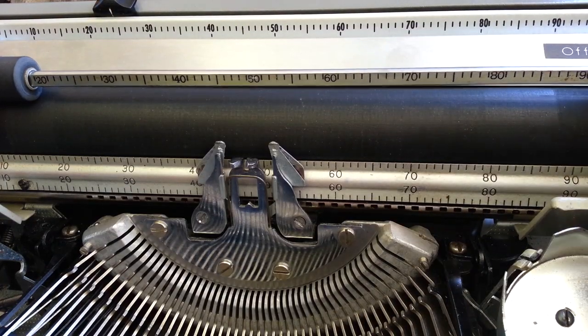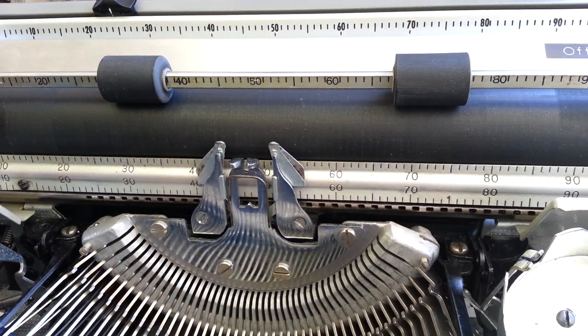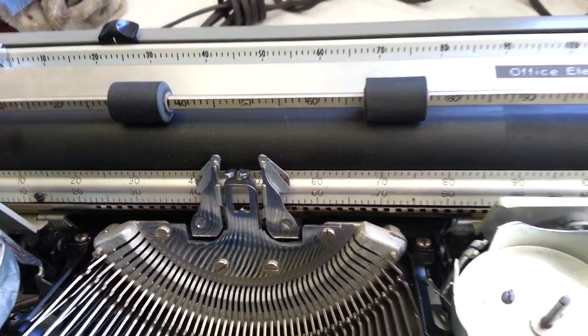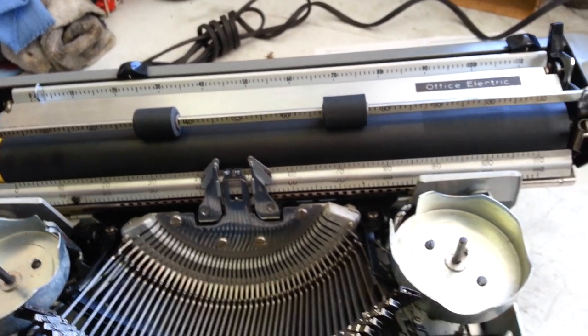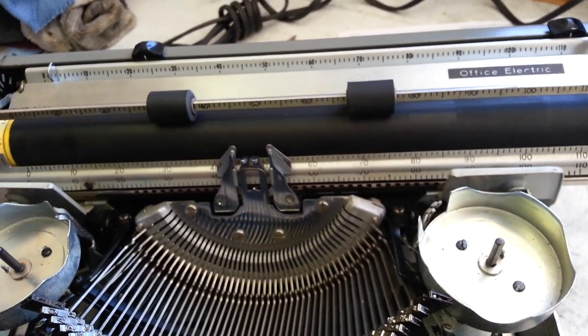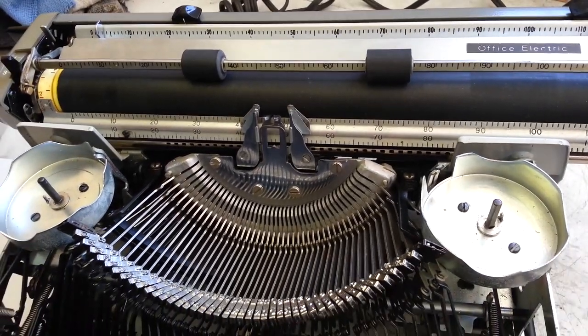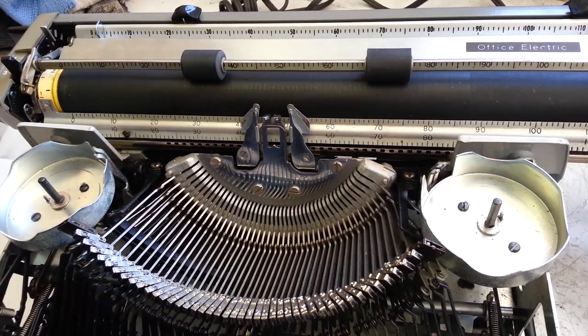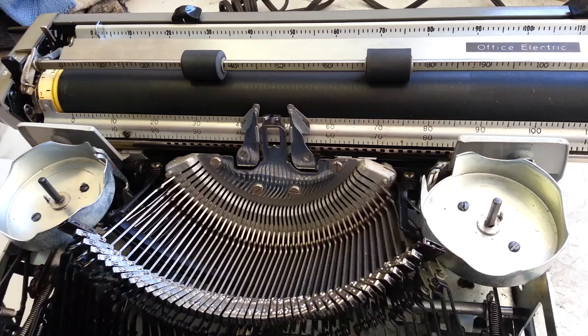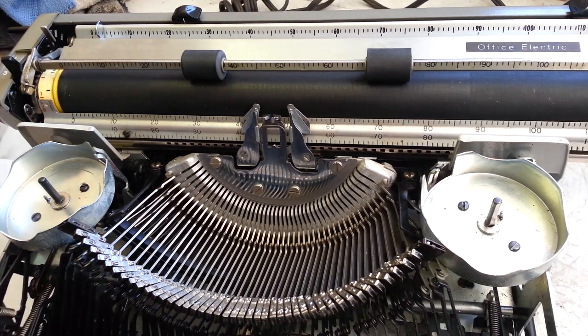Duane here, PhoenixTypeGranitor.com. Got the Smith Corona Portable here. This happens to be an electric Secretarial 250. But what I'm going to show applies to all these Smith Coronas in this era.